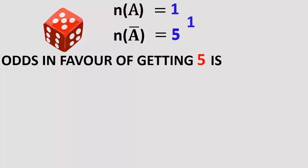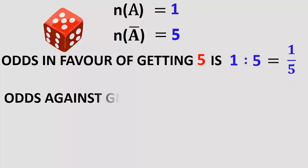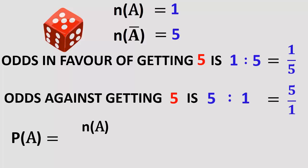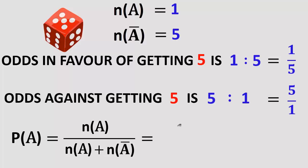Odds in favor of getting 5 is 1 is to 5, that is 1 by 5. Odds against getting 5 is 5 is to 1, that is 5 by 1. P(A) equals n(A) by n(A) plus n(A-bar), which equals 1 by 1 plus 5, that is 1 by 6. This equals n(A) by n(S).